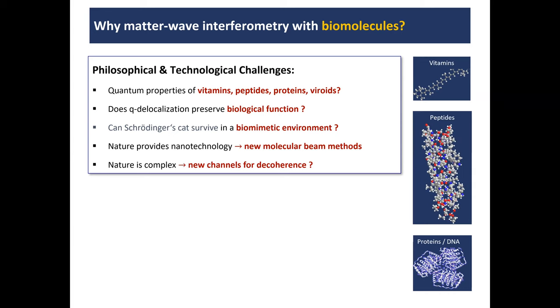And why should we do that in the first place? And again, it's a philosophical question. Just the question, can we do it? Can we prepare vitamins, peptides, proteins, viroids, whatever, in quantum superposition states? No one has done it. Can we do it? Would that in any way change the biological function? That's a kind of philosophical second-order question. Would such Schrödinger cat states survive? And can we have a biomimetic environment? Can we coat these biomolecules with water and make them think, in quotation marks, to be in the natural environment?